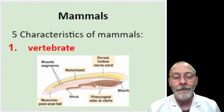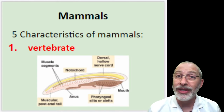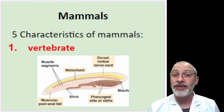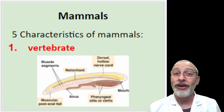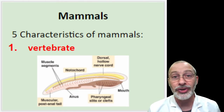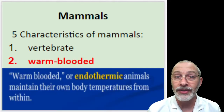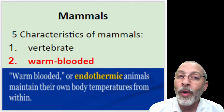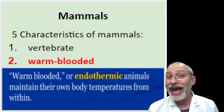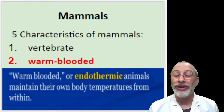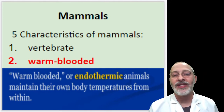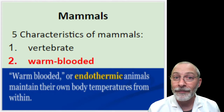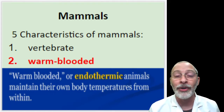If you refer to last week's topic on vertebrates, by me just saying that being a vertebrate is a characteristic of mammals, you know that all mammals share all of the characteristics we discussed last week regarding vertebrates. The second characteristic of mammals is that they are all warm-blooded, which is really a misnomer — not an accurate scientific term. We use the term endothermic.